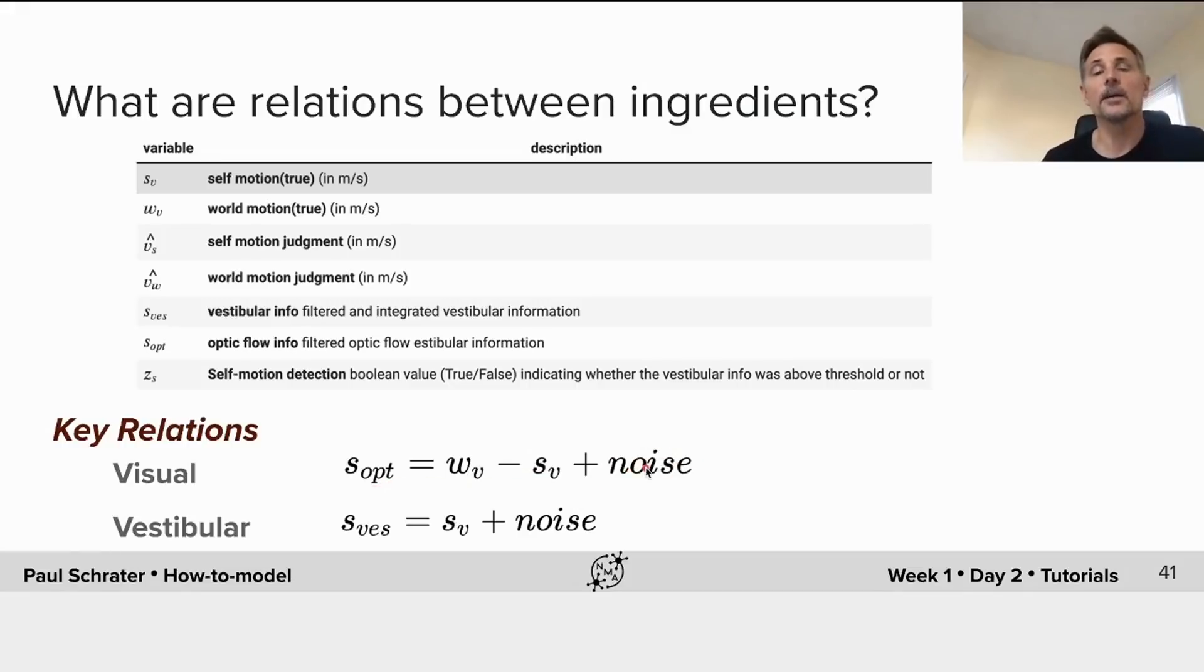And this noise here represents the fact that this is corrupted in a systematic way, which the brain is trying to overcome. The vestibular information is similar, except it only depends on the self-motion, together with its own noise, which is different.